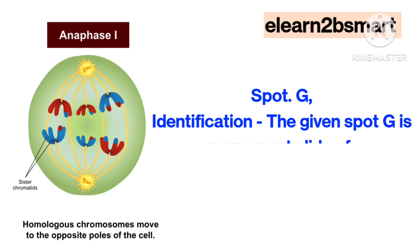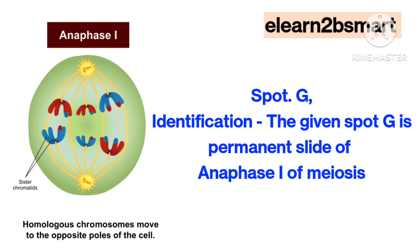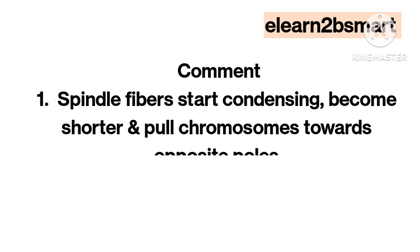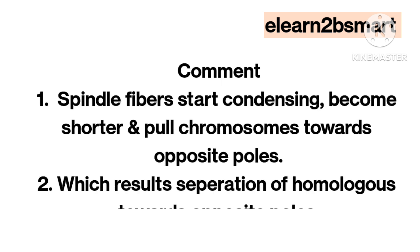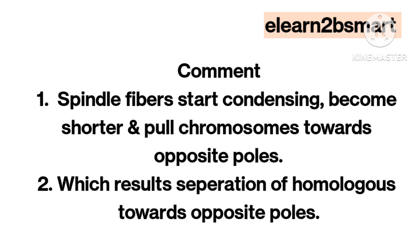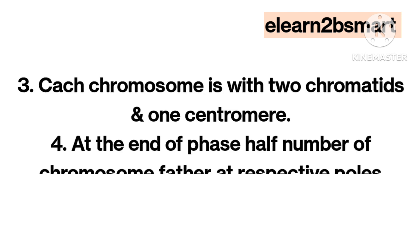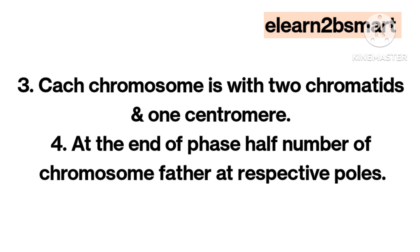Spot G. Identification: The given spot G is a permanent slide of anaphase I of meiosis. Comment 1: Spindle fibers start condensing, become shorter, and pull chromosomes towards opposite poles, which results in the separation of homologous chromosomes towards opposite poles. Each chromosome has 2 chromatids and 1 centromere. At the end of this phase, half the number of chromosomes gather at respective poles.